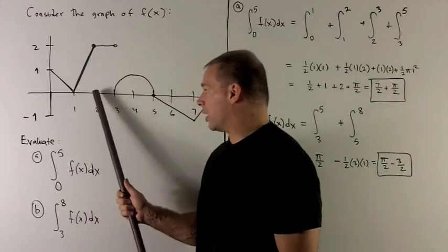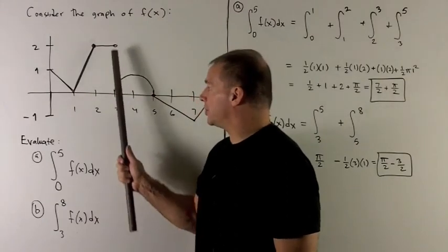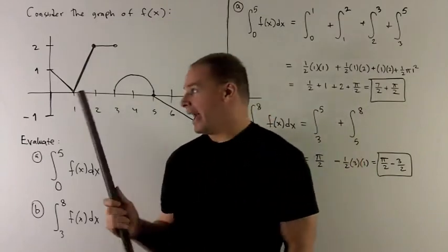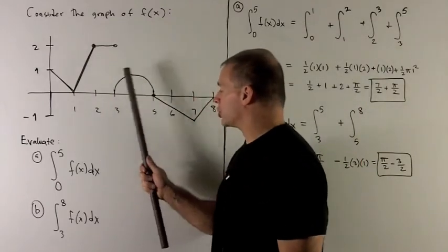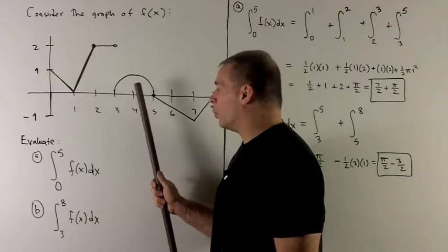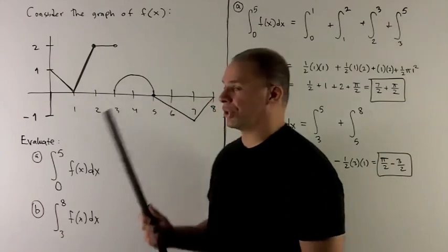I have a rectangle with base 1 and height 2, so that's just 2. For the semicircle with radius 1, the area is π times 1 squared divided by 2.